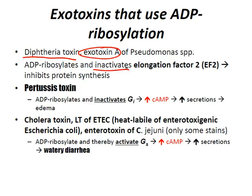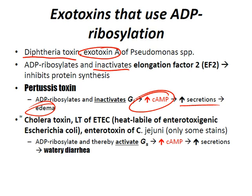The pertussis toxin ADP ribosylates and inactivates Gi, which is the Gi-coupled protein. Therefore, you get increased cyclic AMP, which leads to increased secretions and edema. You need to know that the pertussis toxin inactivates the Gi-coupled receptor.